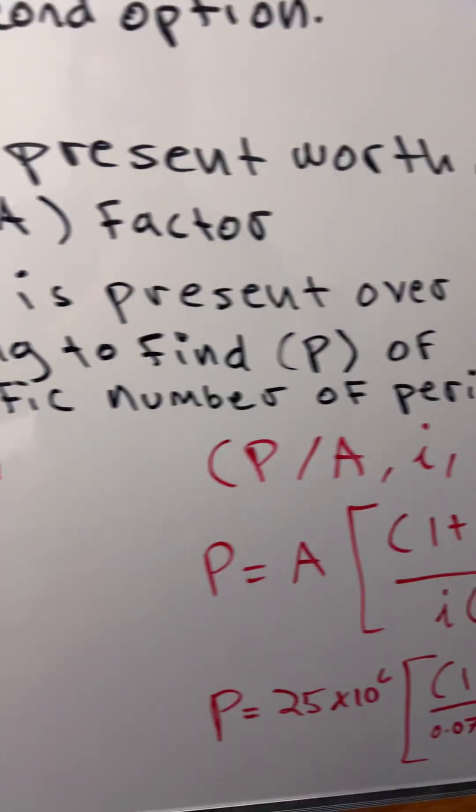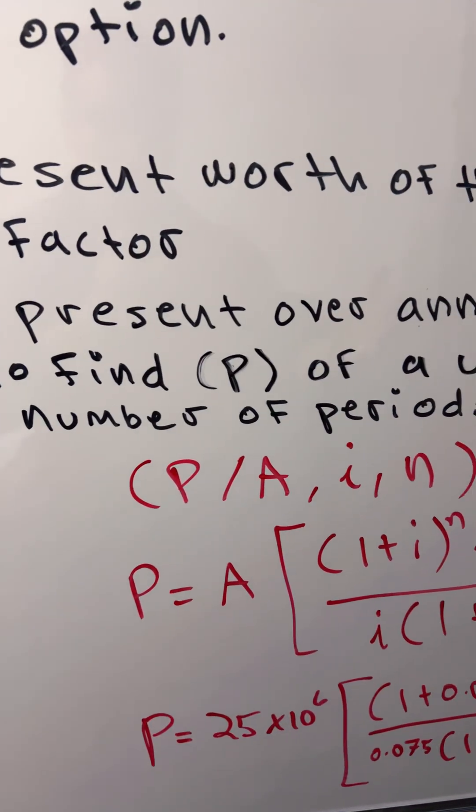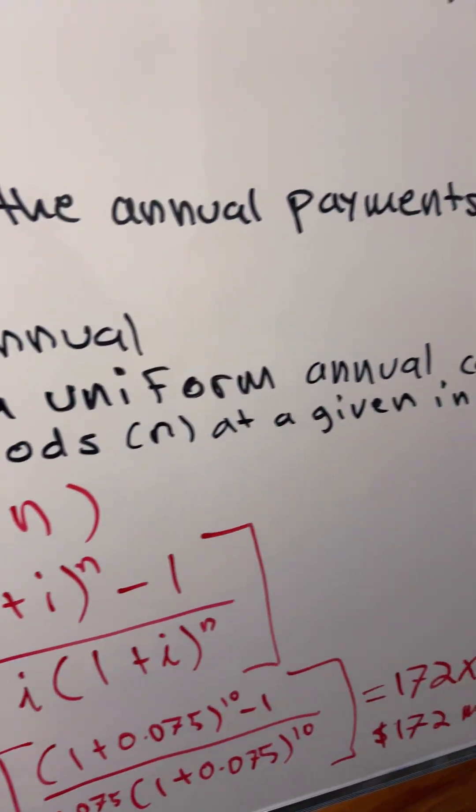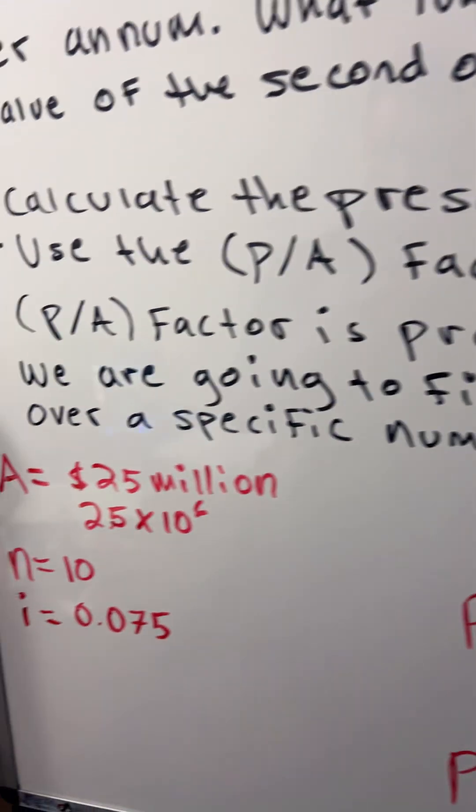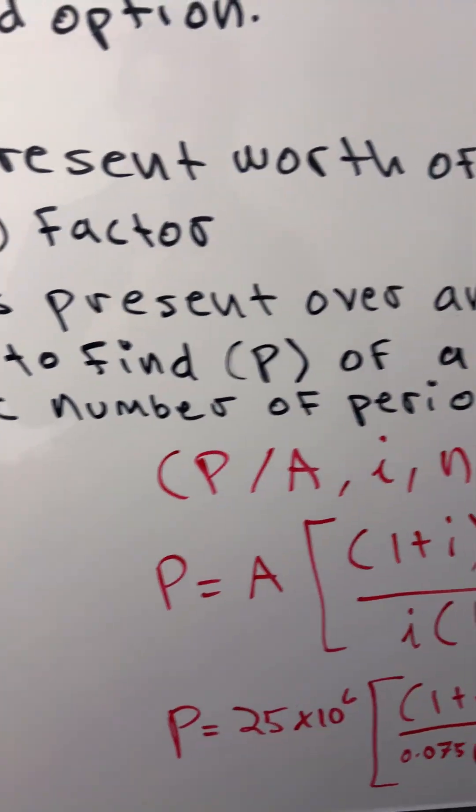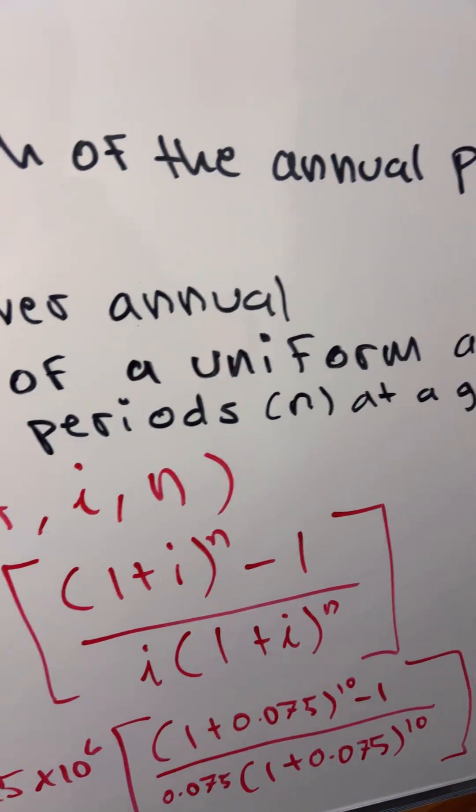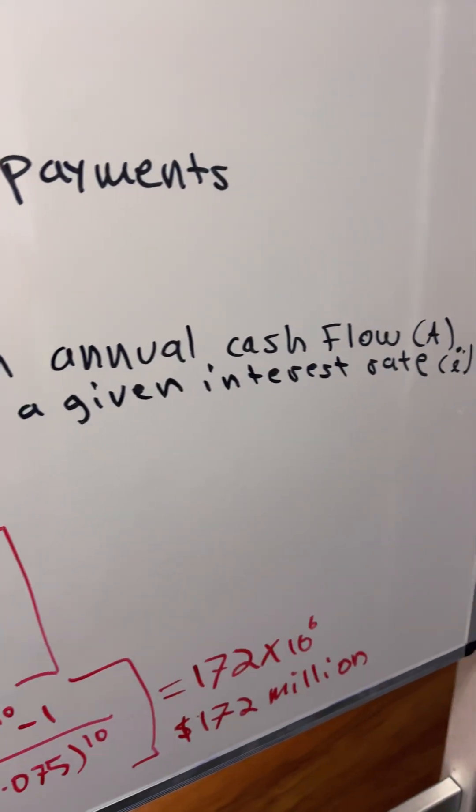We're going to find P, which is the present of a uniform annual cash flow A over a specific number of periods N at a given interest rate i.